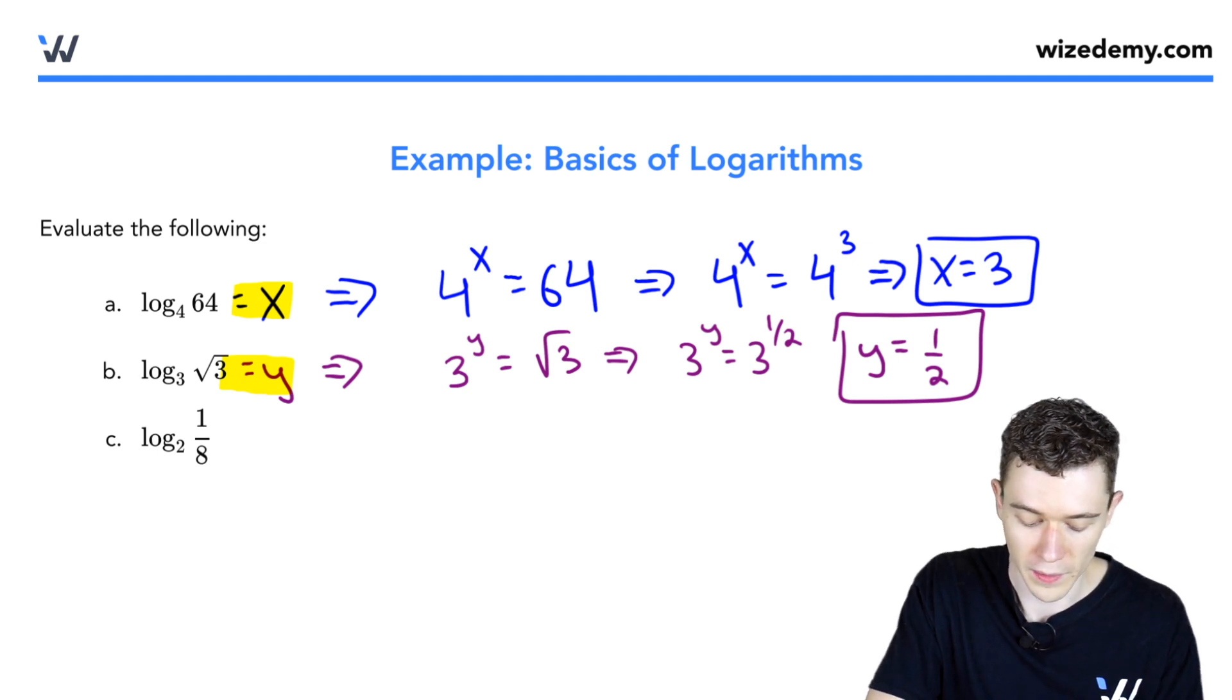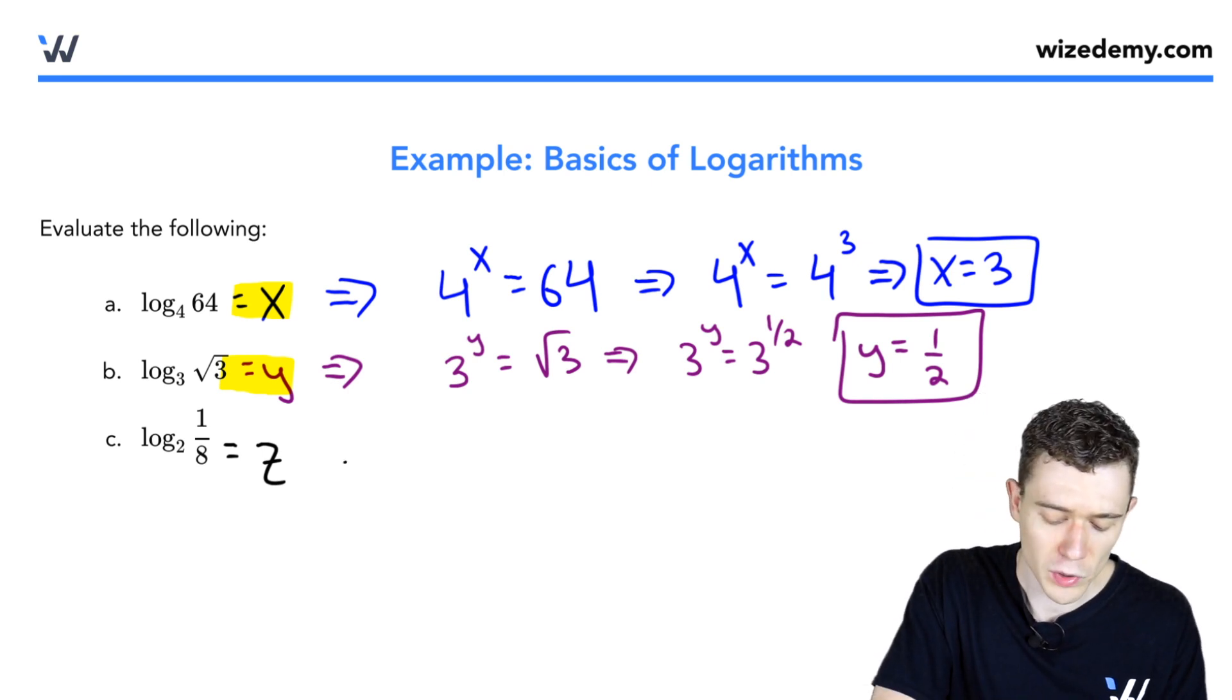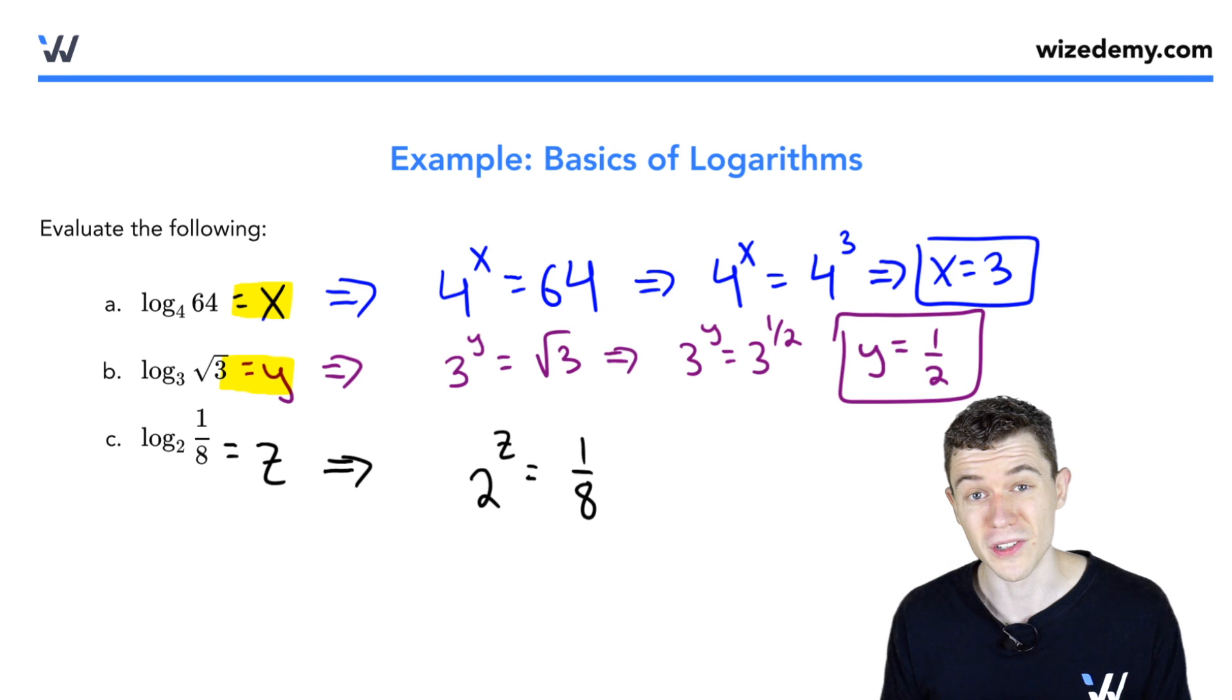One more to go. Let's call this last one z. Log base 2 of 1 eighth is z. Switch this to the exponential form. This means 2 to the z power equals 1 over 8. Another exponential equation.